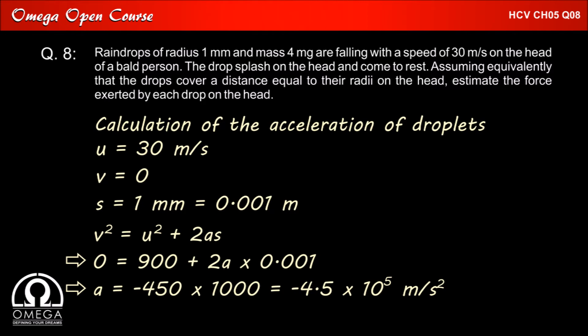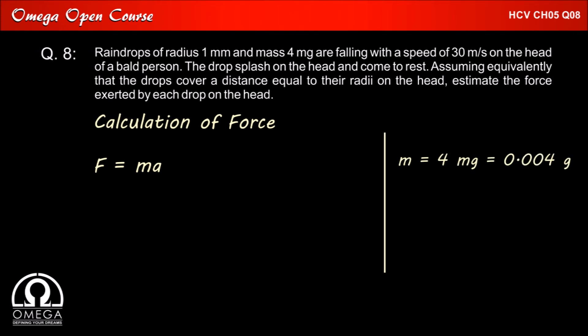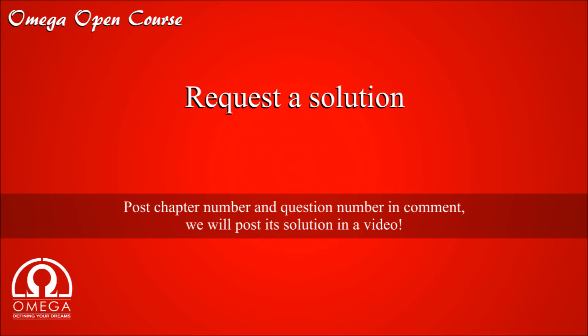The negative sign indicates that the force or the acceleration is opposite to the direction of motion. Now force equals mass times acceleration. Mass is 4 milligram, that is 4 × 10⁻⁶ kg, and acceleration is 4.5 × 10⁵ meters per second squared. Putting the values in the equation, we get F = 4 × 10⁻⁶ × 4.5 × 10⁵ Newton, that is 1.8 Newton.